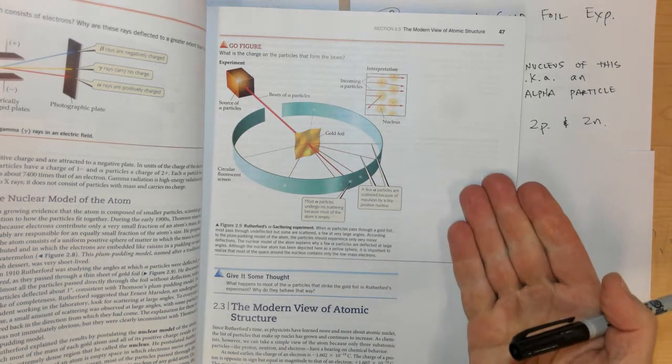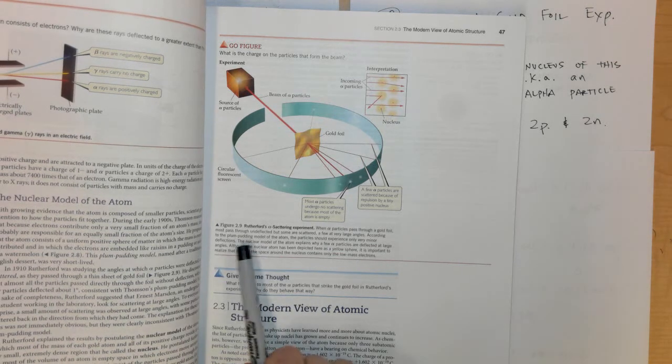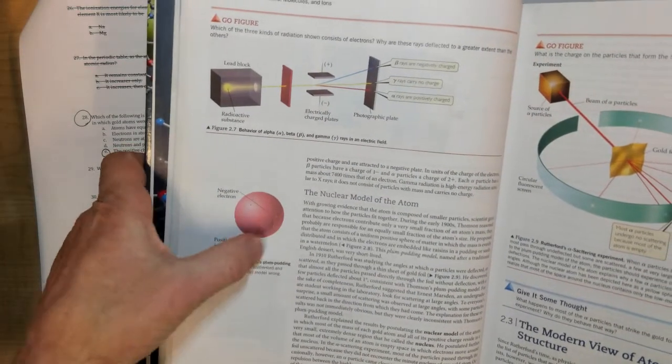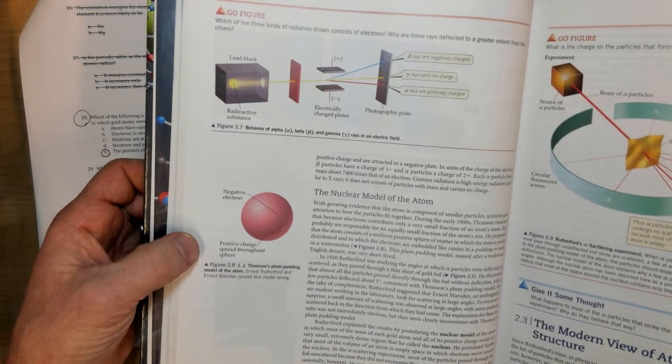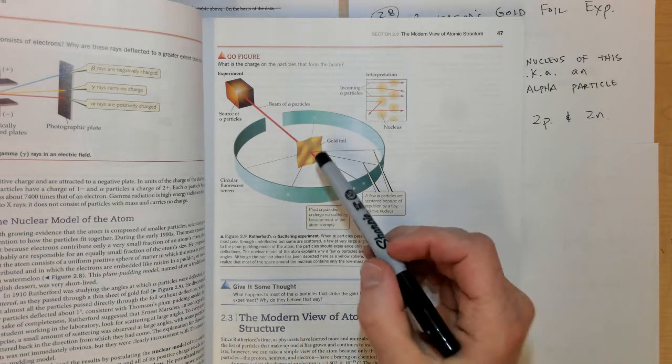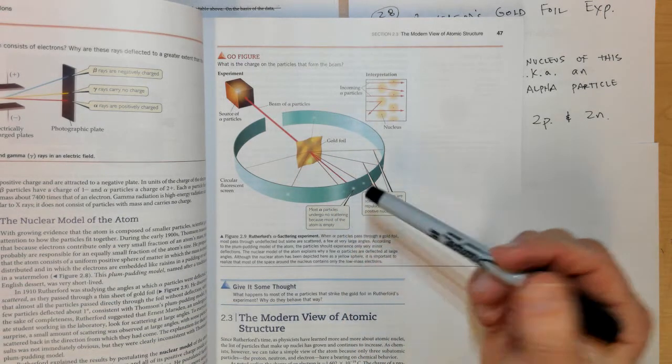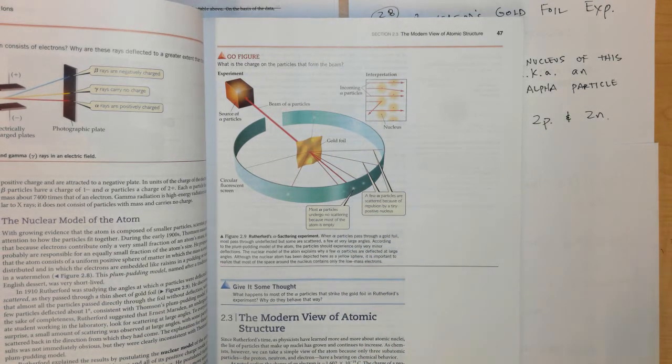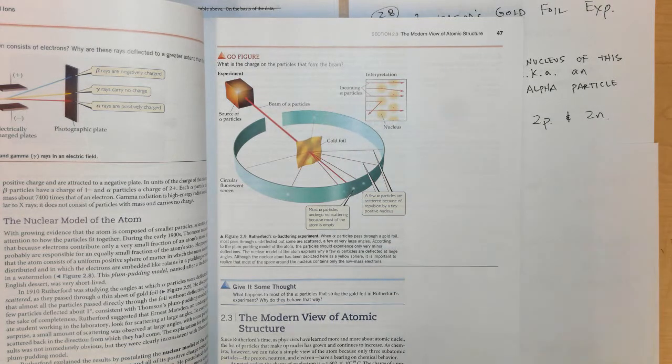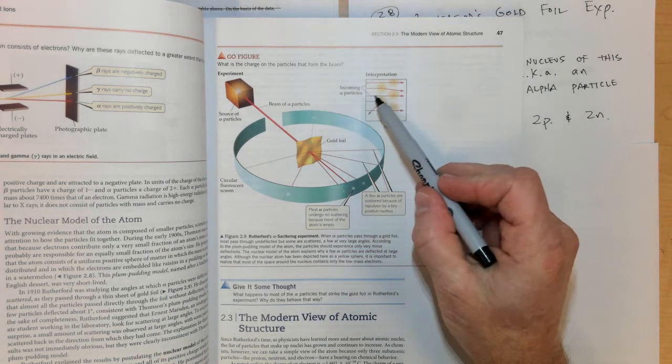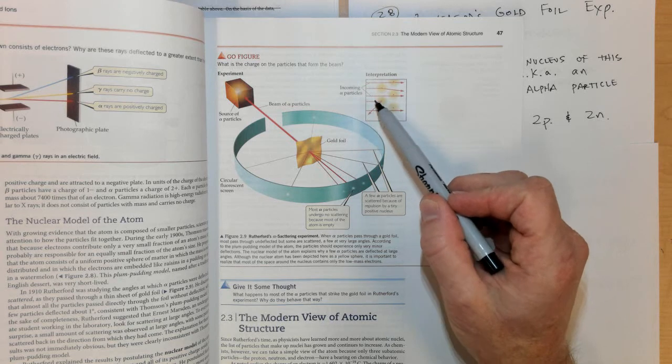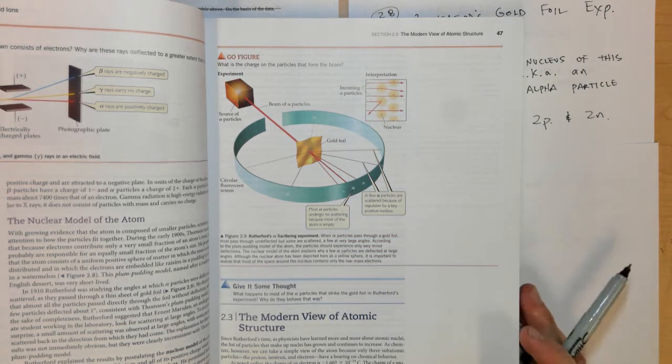Originally when they did this experiment they had a model called the plum pudding model of the atom. The plum pudding model said that there were negative and positive charges spaced throughout the atom. This showed that there was a dense positive area to the gold atoms because the positively charged particles of the alpha particle were bounced away from the nucleus of those gold atoms. You can see that most of them pass right through or were just slightly deflected, but some of them bounced straight back because they hit the dense positive nucleus of those gold atoms.